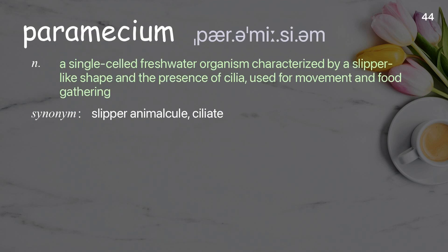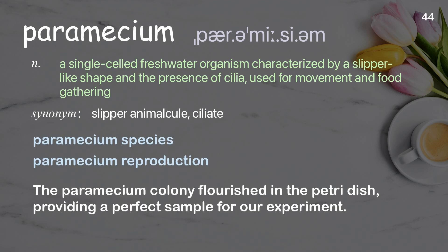Paramecium. A single-celled freshwater organism, characterized by a slipper-like shape and the presence of cilia, used for movement and food gathering. Examples: paramecium species, paramecium reproduction. The paramecium colony flourished in the petri dish, providing a perfect sample for our experiment.